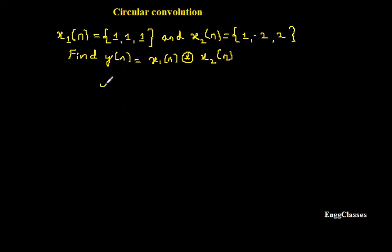I would write y(n) equals circular convolution of x1(n) and x2(n). So I already know the formula for this circular convolution which is summation m equal to 0 to N-1 of x1(m) times x2(n-m). Whatever the two brackets I am writing, it means it is circular shift, not just the time shift. So how do I do the calculation?